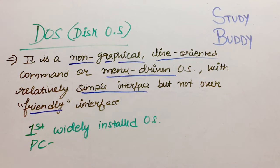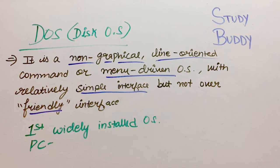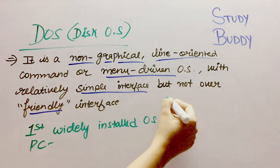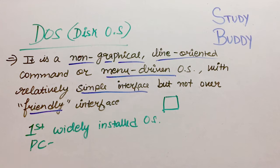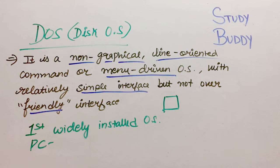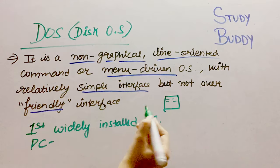DOS is a non-graphical, line-oriented command or menu-driven operating system with a relatively simple interface but not an over-friendly interface. This is non-graphical, you will not see any images in it. It is quite simple. If you use Windows 10, you will see how many photos are in it, but DOS was a black screen with some commands you have to work with.